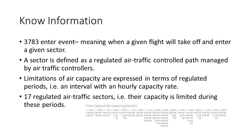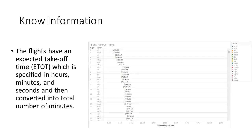In this case, there were 3,783 inter-events, meaning when a given flight will enter a given sector. A sector is defined as a regulated air traffic controlled path managed by two air traffic controllers. This airport has 17 defined sectors. Sector capacities are limited during regulated periods. Airline schedules are known with expected takeoff times of flights, and we needed the delay time of each flight reduced for better customer service and managed resource efficiency.